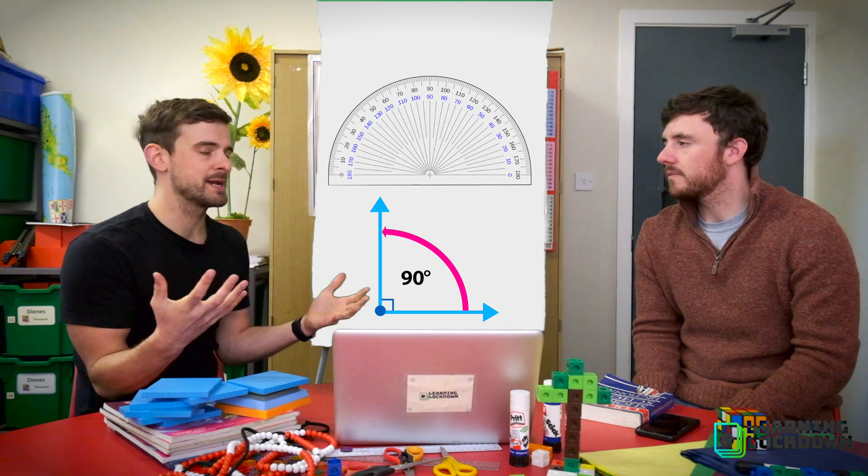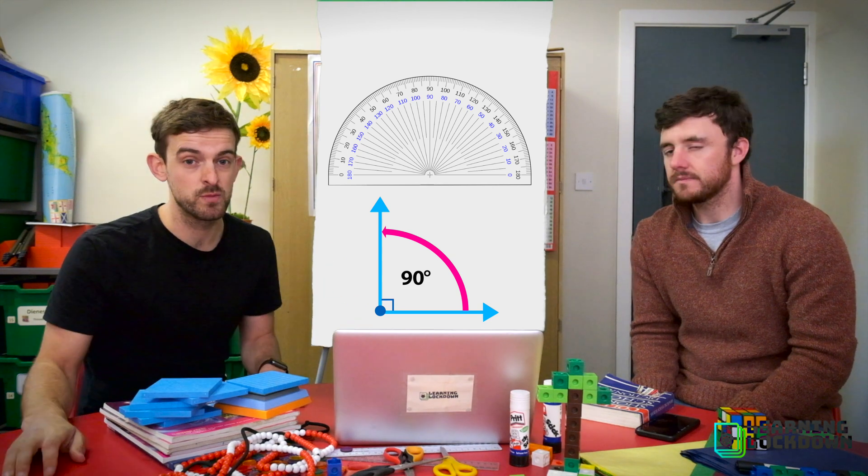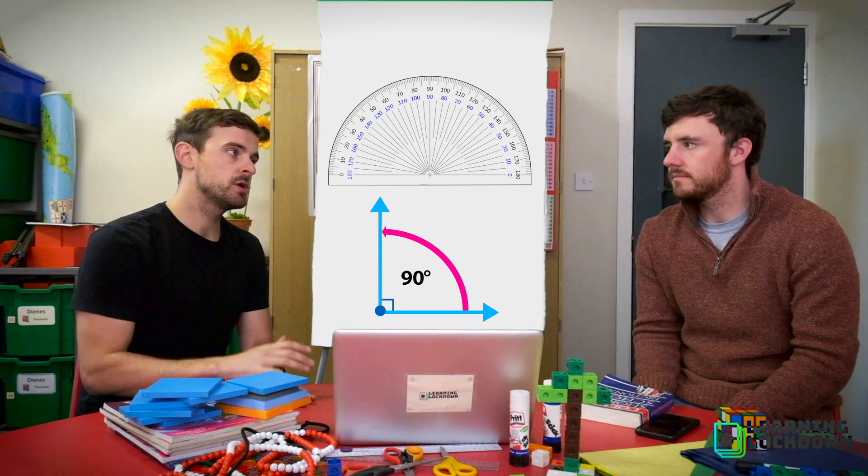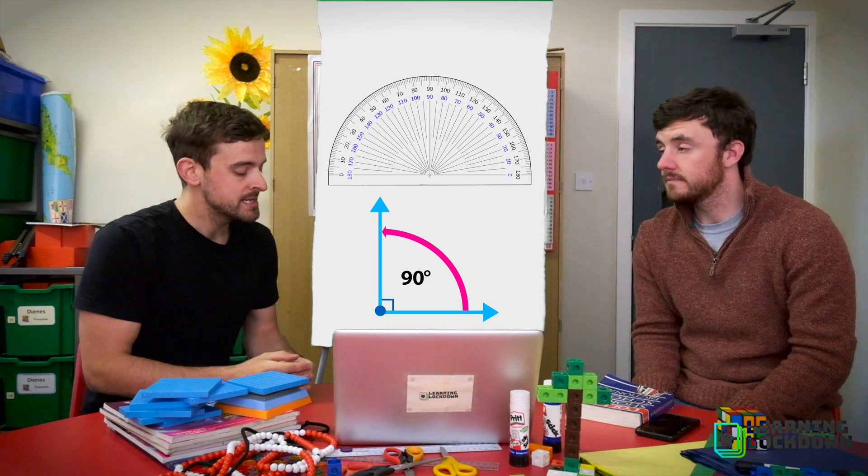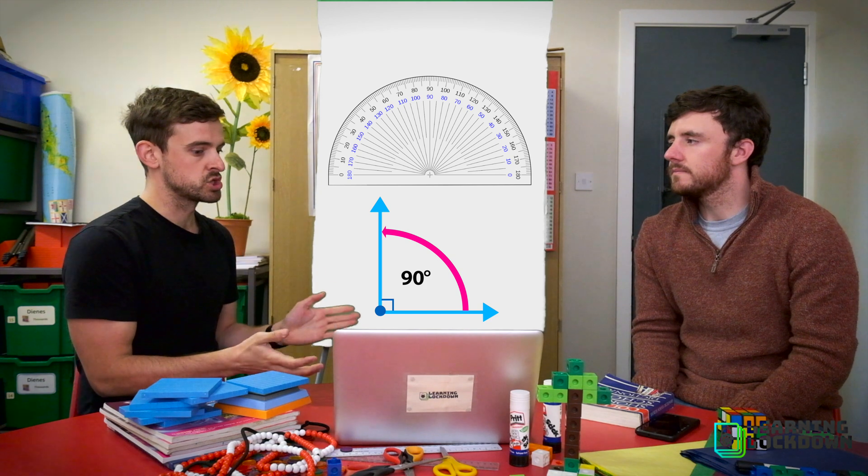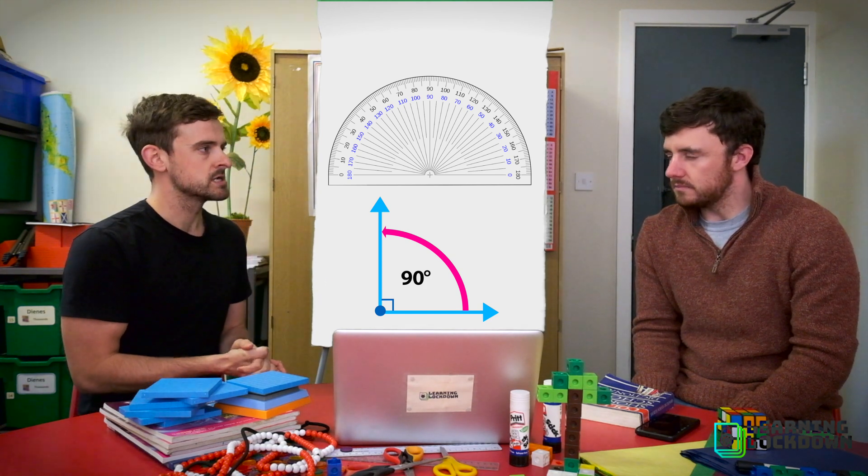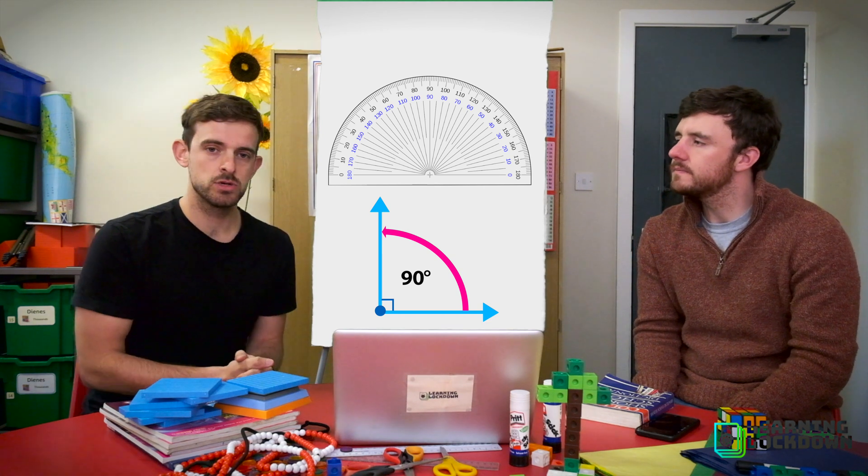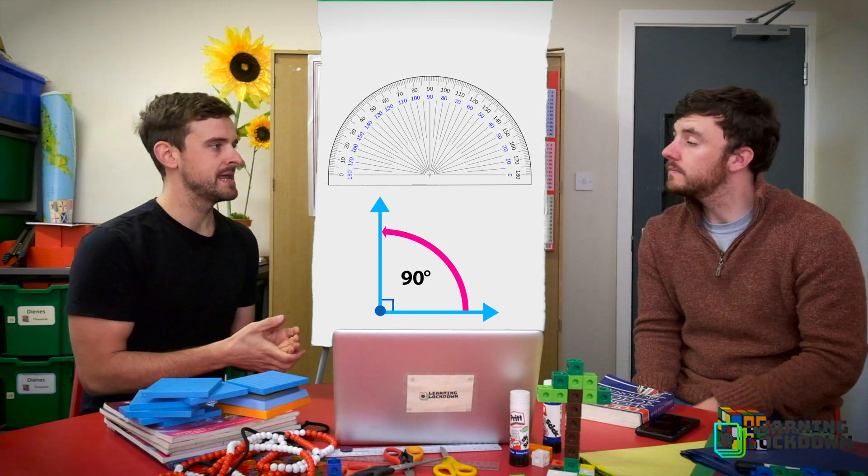Brilliant. Now a right angle is a very special type of angle because it has its own special name. We don't just call it 90 degrees, we call it a right angle. But also it's a good indicator to help us name some other angles. Because some angles could be smaller than 90 degrees and some angles could be bigger than 90 degrees and these also have special names.